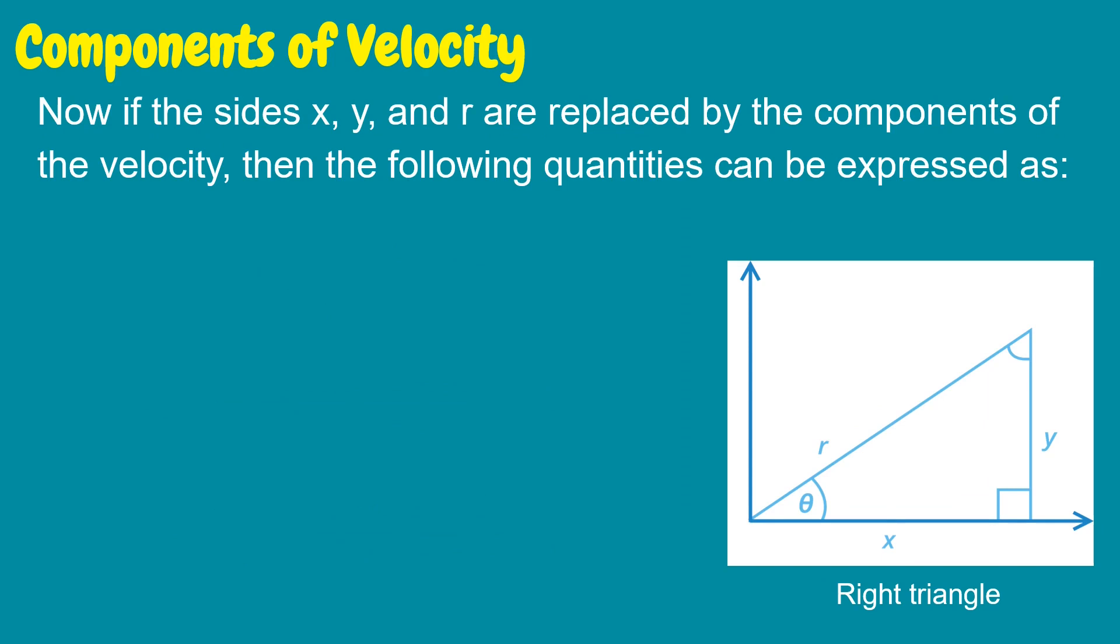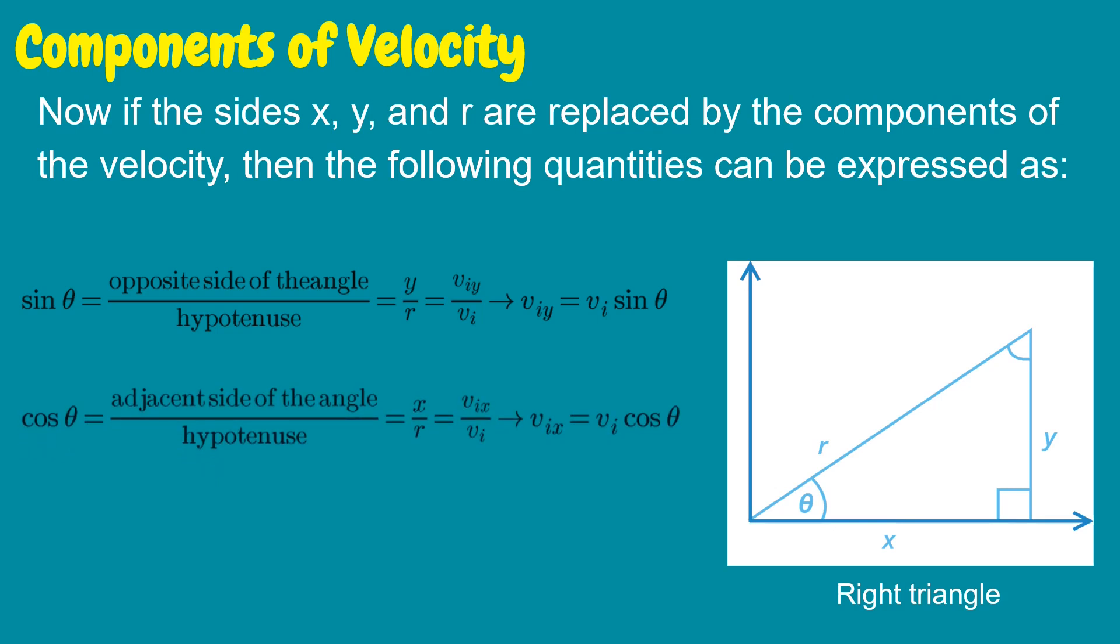Now, if the sides x, y, and r are replaced by the components of the velocity, then the following quantities can be expressed as: sin theta equals opposite side over hypotenuse, where we can have the formula initial velocity along y equals initial velocity sin theta. Cosine theta equals adjacent side over hypotenuse, or the formula initial velocity along x equals initial velocity cosine theta. And tan theta or the angle of projection equals tan inverse of initial velocity along y over initial velocity along x.